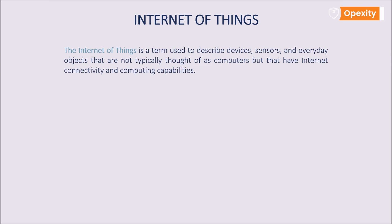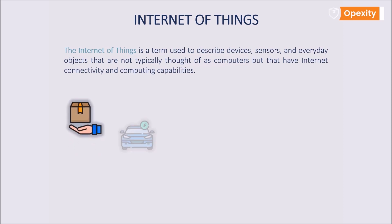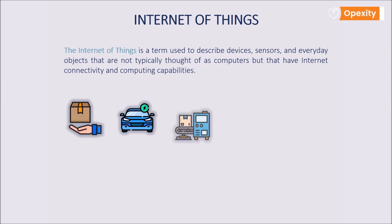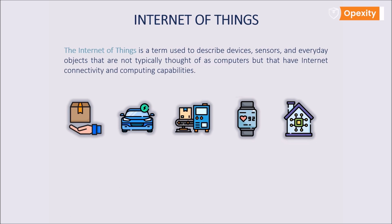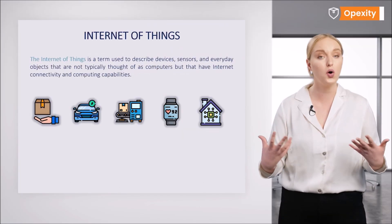These objects include consumer goods, cars and trucks, industrial components, wearable devices, and collections of devices that work together to create concepts such as smart cities and smart homes.